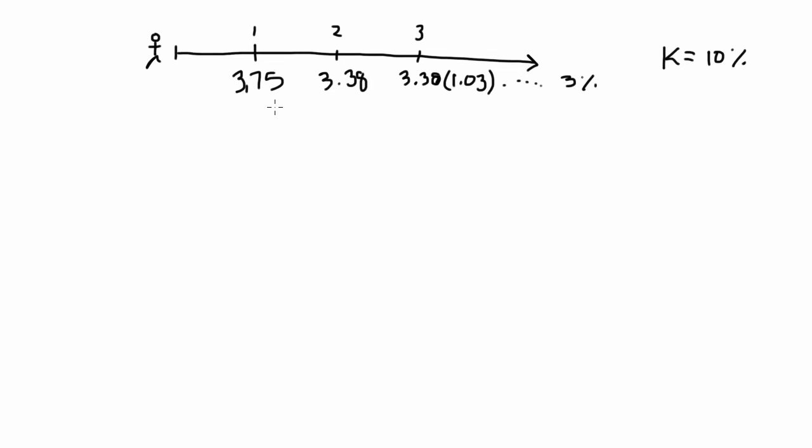We pretend that we're standing one period before that infinite stream of cash flow starts. So, on our timeline, we would be pretending to stand at period two. The price we would expect to be able to sell the stock for at period two is the present value of this infinite stream of cash flows.